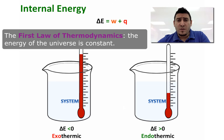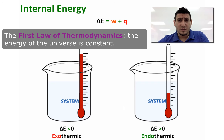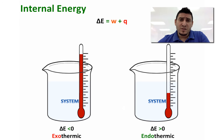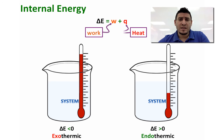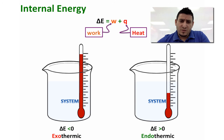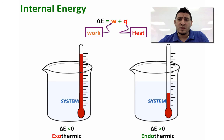The first law of thermodynamics states that the energy of the universe is conserved — it is constant. The internal energy can be defined as the sum of work plus heat: delta E equals W plus Q, where W is work and Q is heat. The exchange of energy between the surroundings and the system determines the sign of delta E. For exothermic reactions, delta E will be negative, and for endothermic reactions, delta E will be positive.